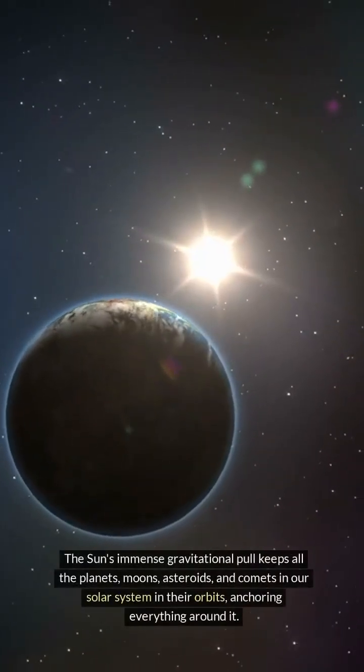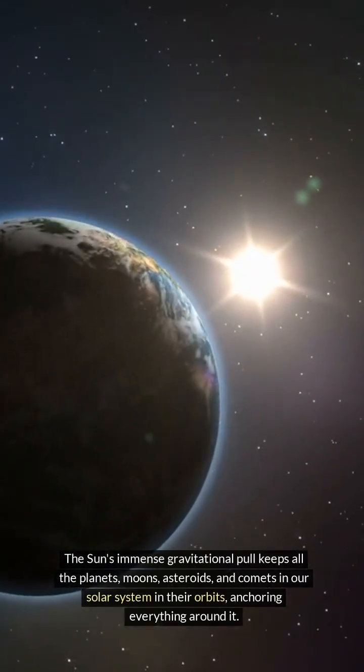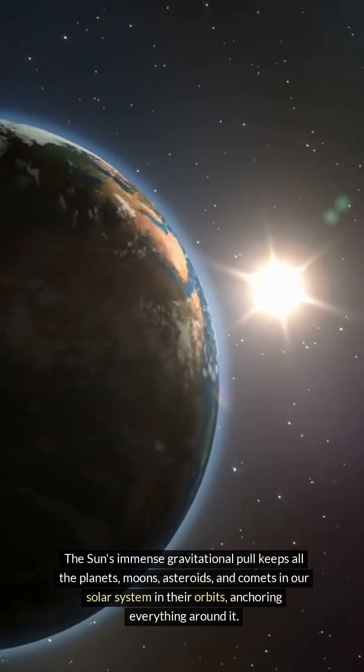The Sun's immense gravitational pull keeps all the planets, moons, asteroids, and comets in our solar system in their orbits, anchoring everything around it.